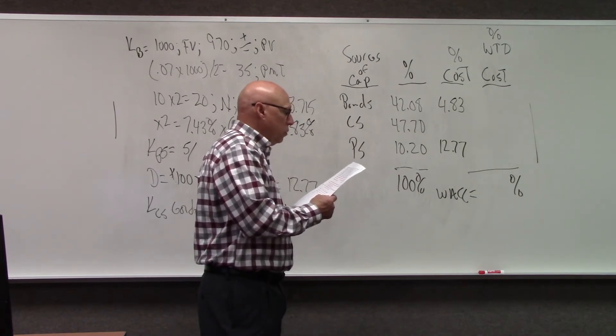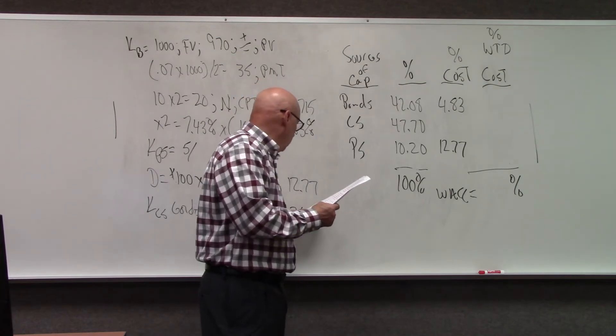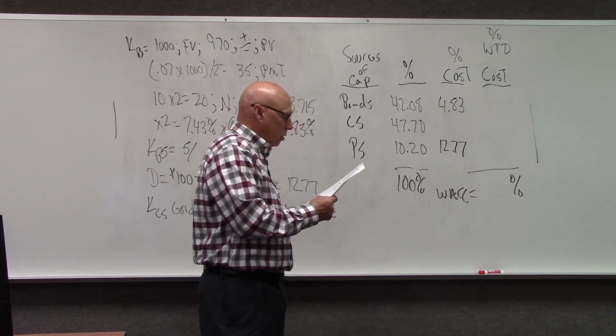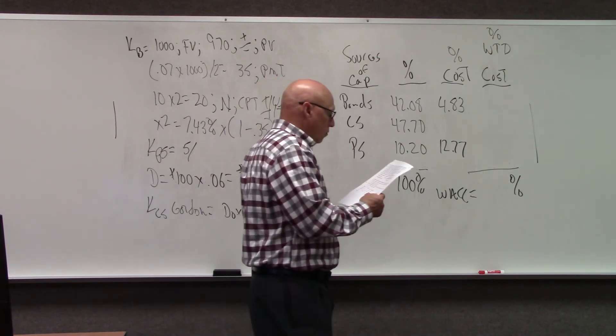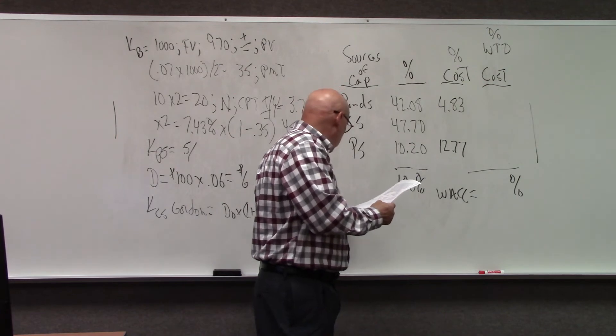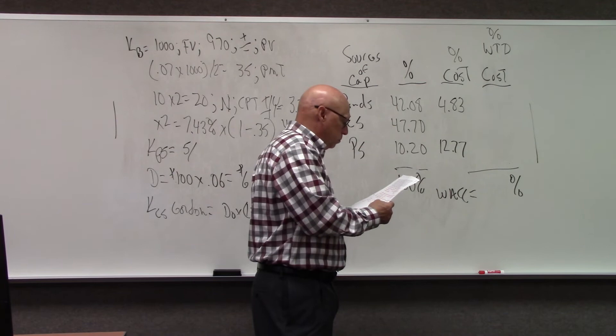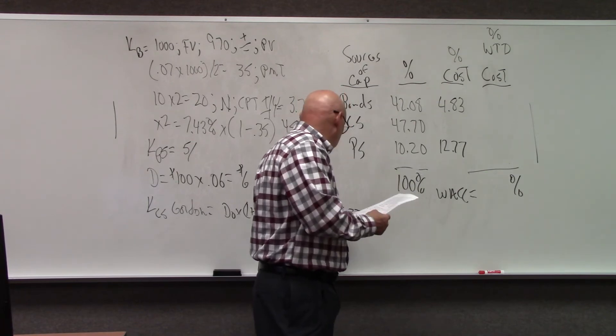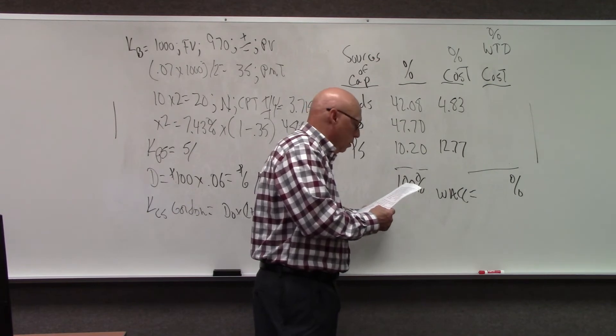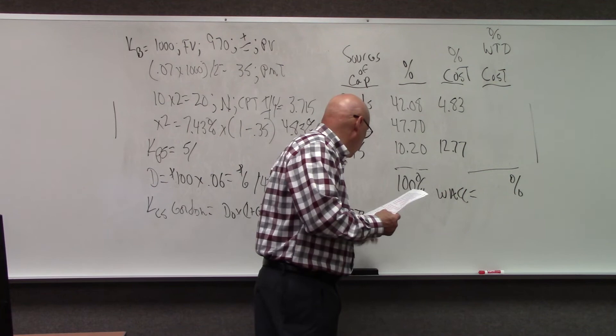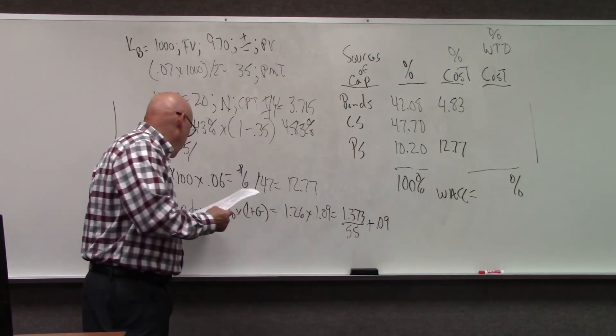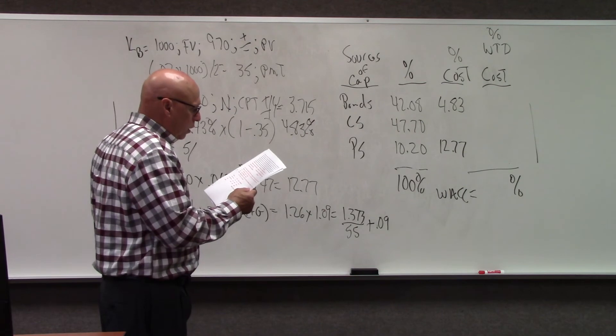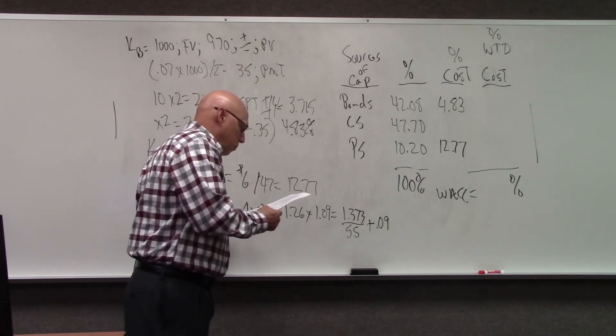$1.26 times 1.09 is $1.37 and a third cents, divided by the market price of $55 plus 0.09, and that equals 11.5%.